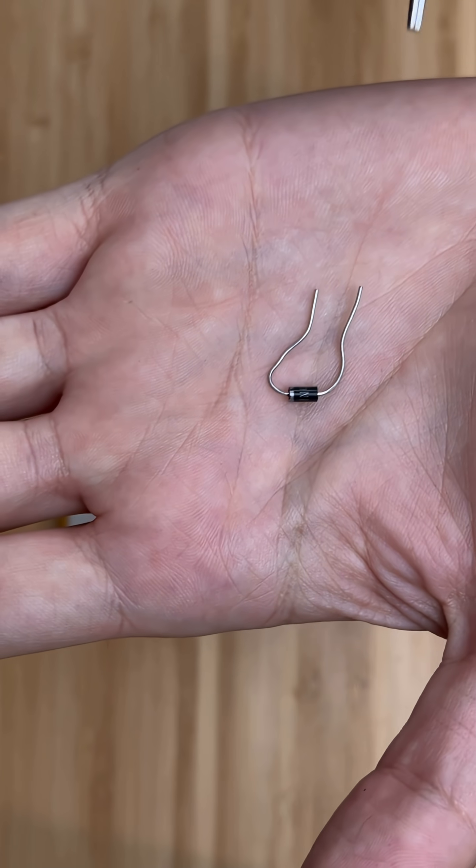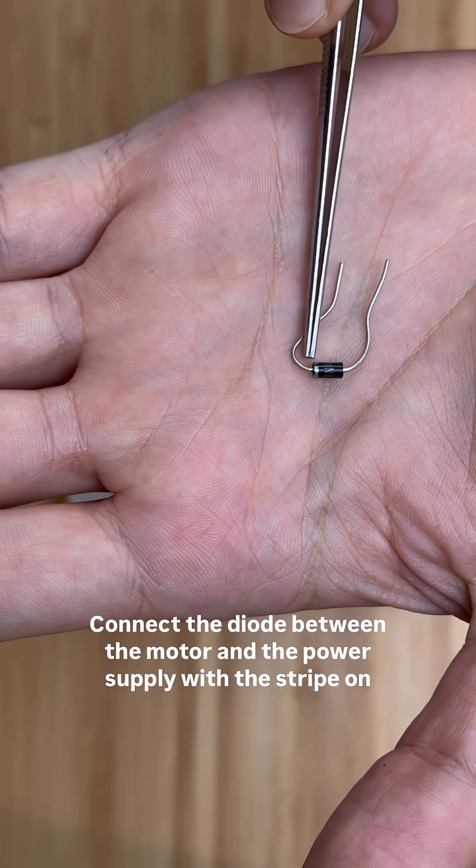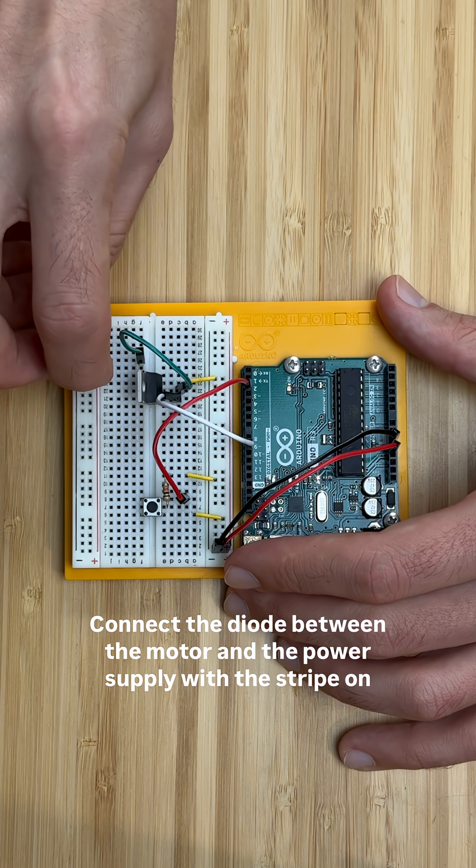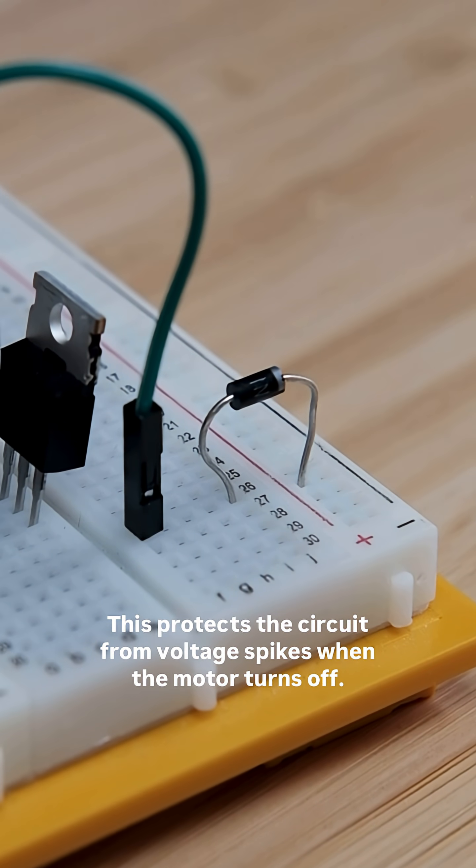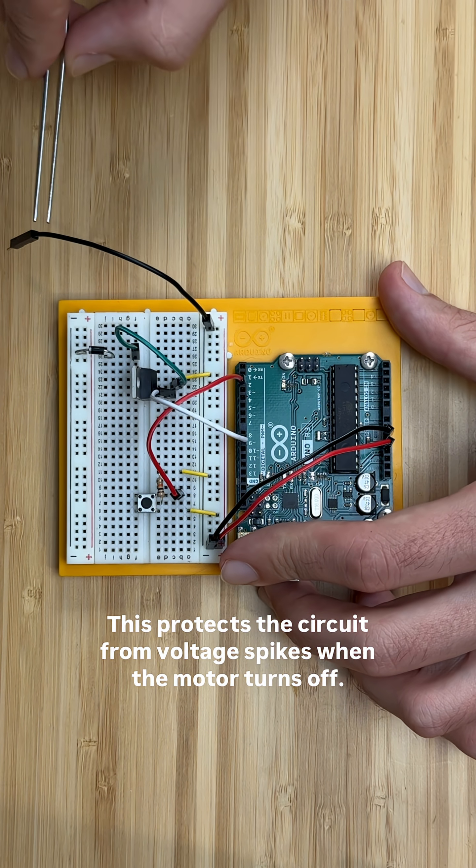Next we'll add a diode. It's important to get the direction right. Connect the diode between the motor and the power supply, with the stripe on the diode pointing towards the 5 volt rail. This protects the circuit from voltage spikes when the motor turns off.